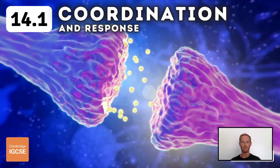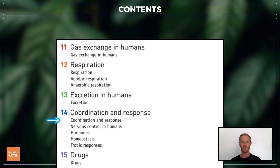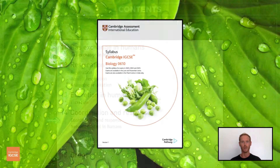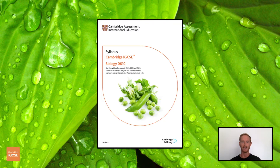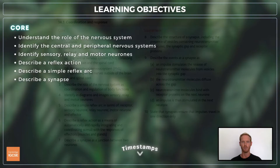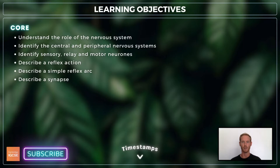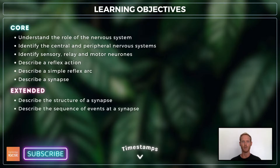Hello and welcome to another complete Cambridge IGCSE biology lesson where you'll learn absolutely everything you need to know on topic 14.1, coordination and response. As always we'll be following the Cambridge syllabus exactly. For topic 14.1 you need to understand the role of the nervous system, identify the central nervous system, the peripheral nervous system and the different types of nerve cells, and describe a simple reflex arc. For extended you also need to describe the structure and function of a synapse.